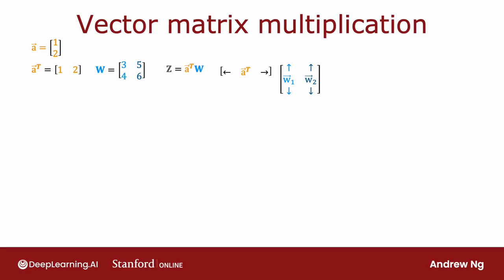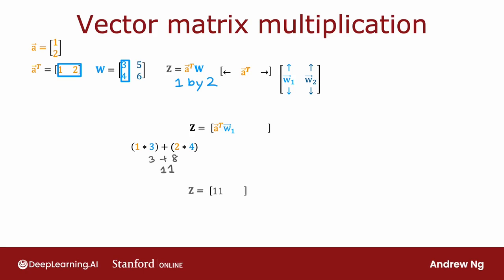Z is going to be a 1 by 2 matrix. To compute the first value of Z, we take A transpose — that's 1, 2 — and multiply that by the first column of W, which is 3, 4. So the first element of Z is 1 times 3 plus 2 times 4, which equals 11. For the second element of Z, we multiply A transpose by the second column of W: 1 times 5 plus 2 times 6, which is 5 plus 12, equal to 17. So Z is equal to the 1 by 2 matrix 11 and 17.